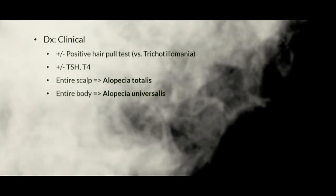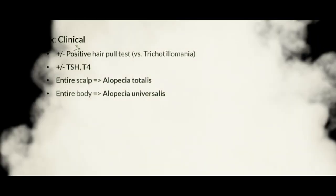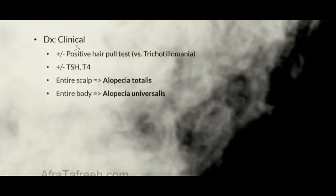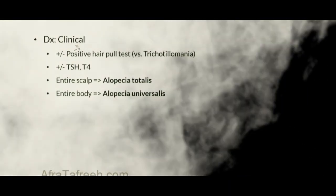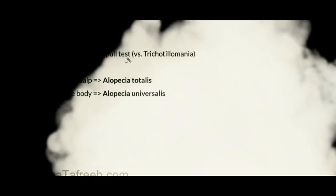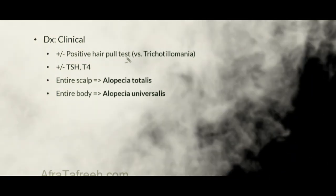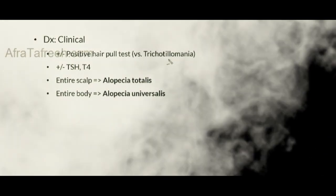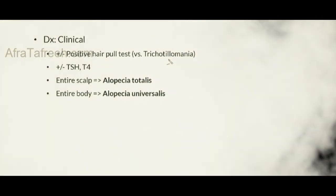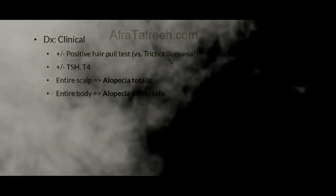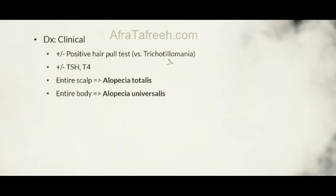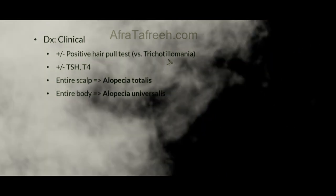The diagnosis of alopecia areata is largely clinical. If a hair pull test is performed, approximately half of patients who are actively shedding will have a positive result. This contrasts with conditions such as trichotillomania, where active shedding is absent and the hair pull test is negative. Clinically, the diagnosis is made based on finding unifocal or multifocal, well-circumscribed, non-inflammatory lesions.